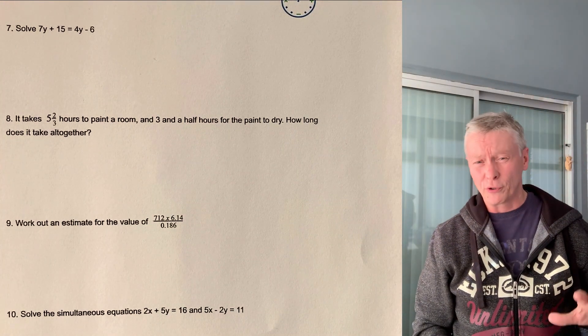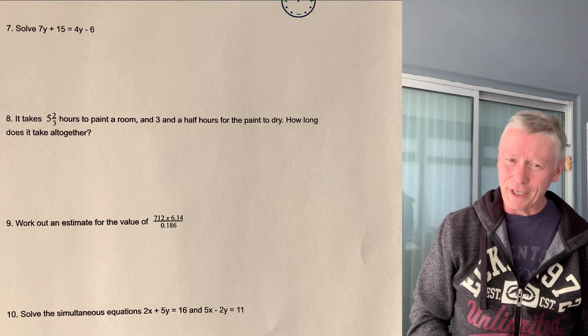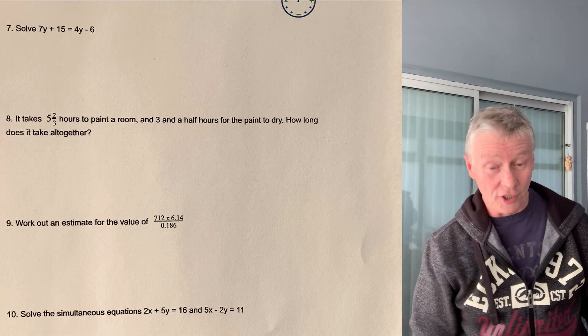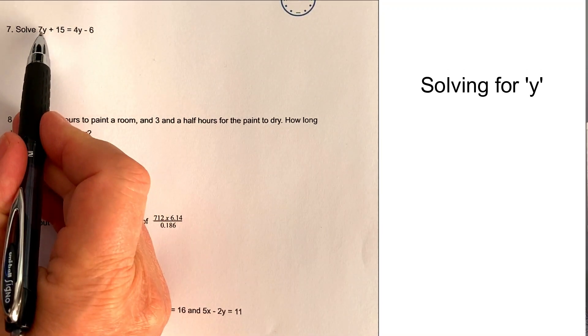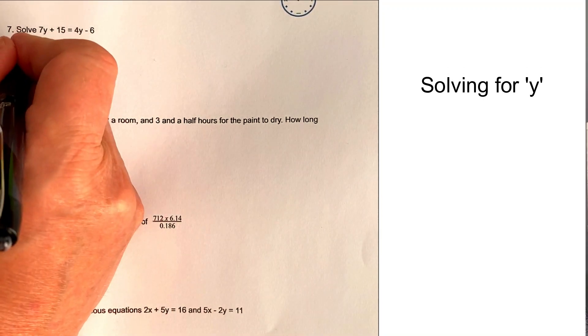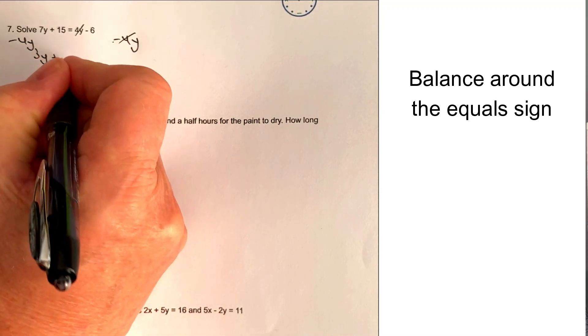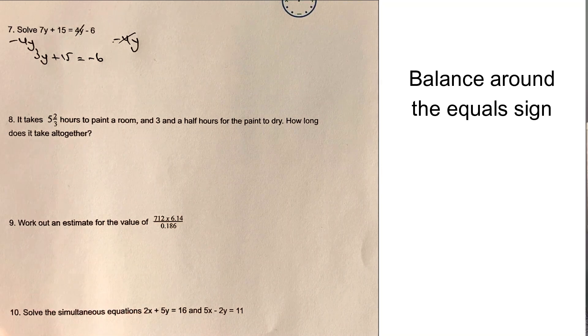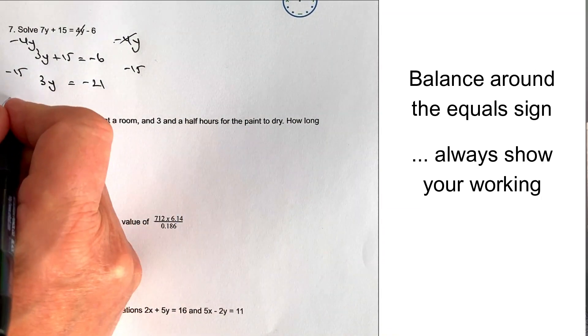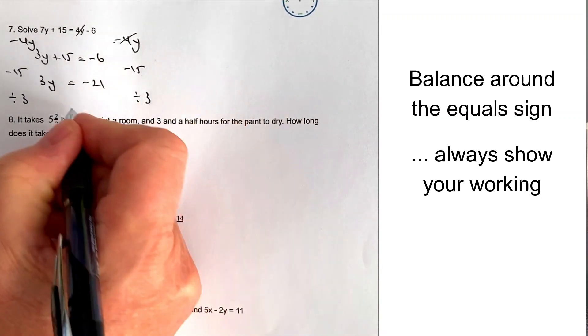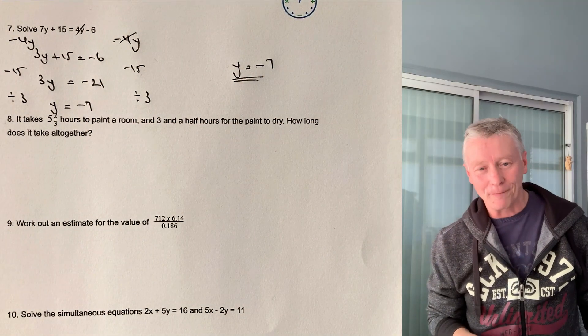So that's question number six dealt with. And we're going to move on to question number seven onwards. Question number seven onwards, fairly straightforward grade four question that you're going to come across on a fairly regular basis. So solving algebra equations kind of useful to kind of go through these sorts of things. And what we're going to do is just find the value of Y in this particular case. So what I'm going to do is say, well, actually, I've got seven Y and four Y there. So I'm going to minus four Y from both sides, because if I do that, it means I lose this four Y and I get three Y plus 15 equals minus six. And then I'm going to minus 15 from both sides. And I'm going to get three Y equals minus 21. If I divide by three, both sides, I get Y equals minus seven.